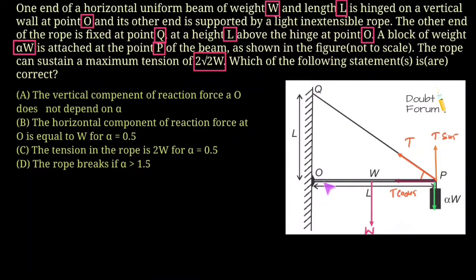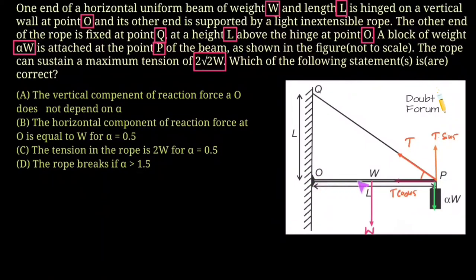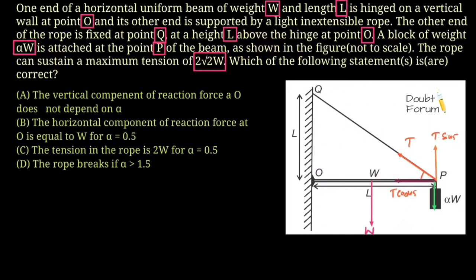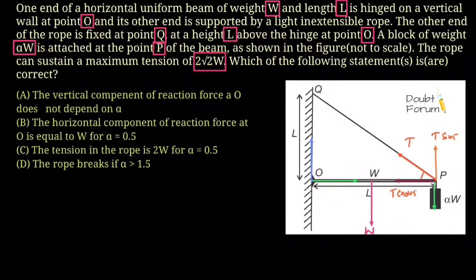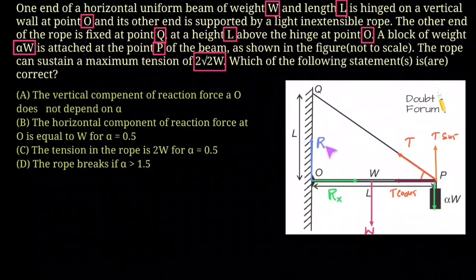The last force to mark is the reaction force from the hinge between the beam and the vertical wall. There is a reaction force acting at point O, and since we don't know its direction, we break it into components: the horizontal component Rx and the vertical component Ry.